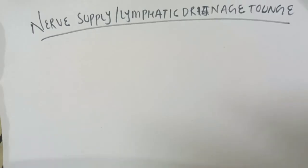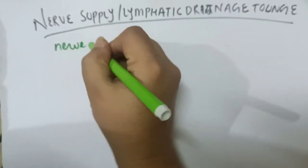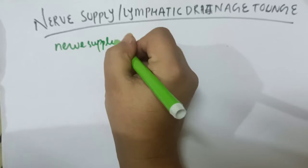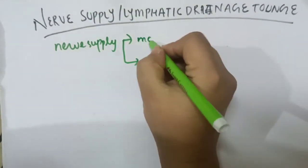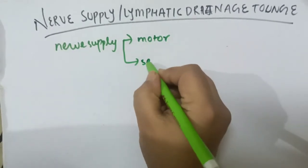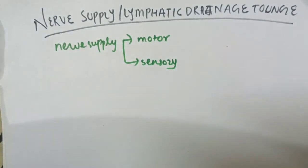Hello everyone. In this module we'll be discussing the nerve supply and lymphatic drainage of the tongue. The nerve supply of the tongue is of two types: motor supply and sensory supply. I'll be forming a chart for you so that it is easy for you to remember.